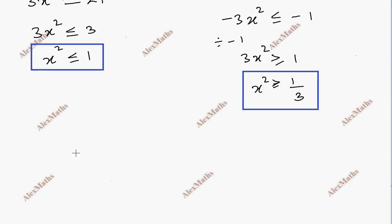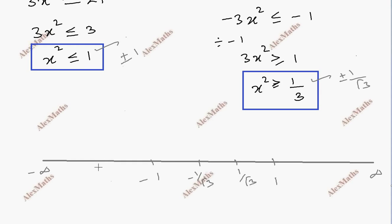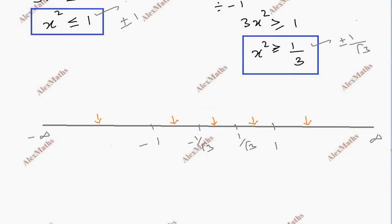We now have a number line from minus infinity to plus infinity. We plot these two inequalities and identify the regions. This gives us three intervals on the number line, and we determine which interval satisfies the inequality.